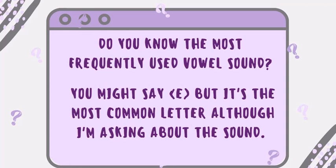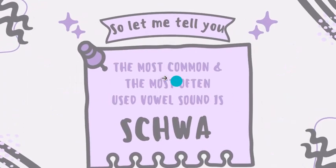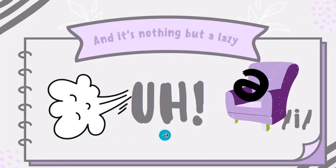If I ask you, do you know the most frequently used vowel sound? You might say letter E, but that's the most common letter — I'm asking about the most common vowel sound. So if you don't know, let me tell you: it's schwa. Schwa is nothing but a lazy A. The symbol is an upside-down letter E, and schwa can also say the short vowel sound in many words. It's a lazy vowel sound and the most frequently used vowel sound. So if you want to learn all about schwa — how to identify it, how to write it in words, and how to teach it to your kids — this video is for you. Be with me to the end.